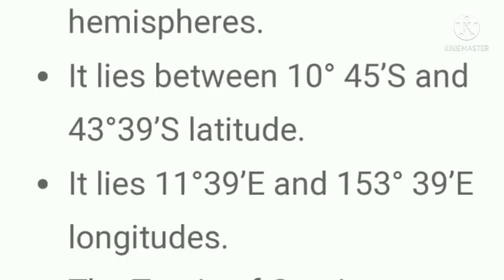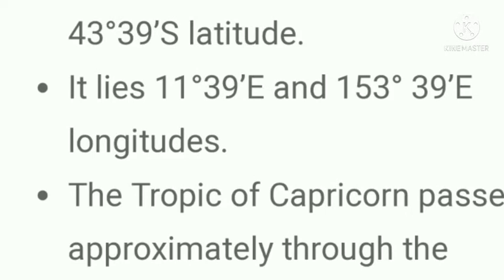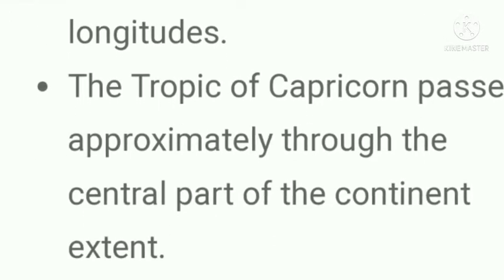Question number two: Explain the location and extent of Australia. Answer: The continent of Australia is situated completely in the southern and eastern hemisphere. It lies between 10 degree 45 south and 43 degree 39 south latitude. It lies between 111 degree 39 east and 153 degree 39 east longitudes. The Tropic of Capricorn passes approximately through the central part of the continent.